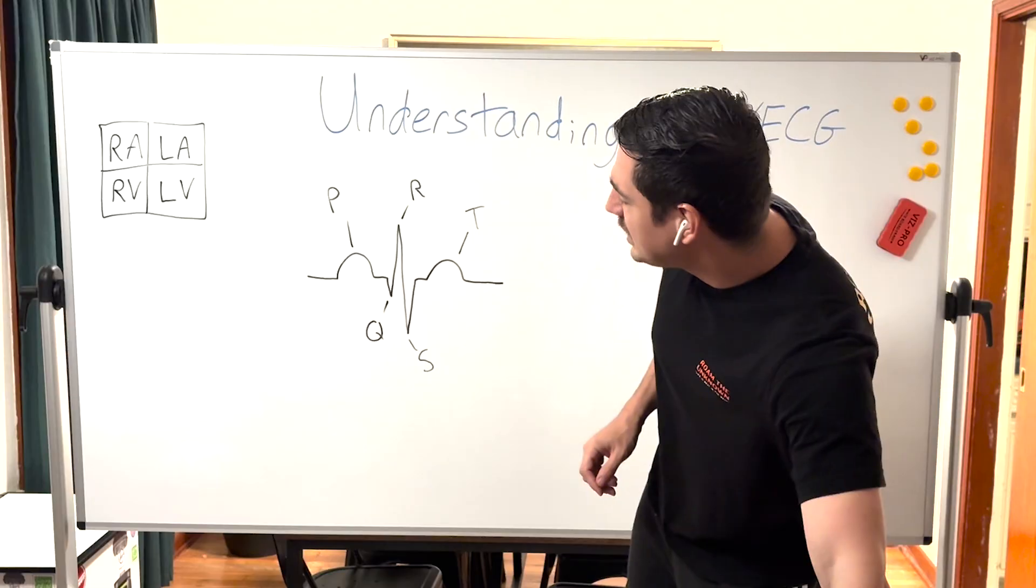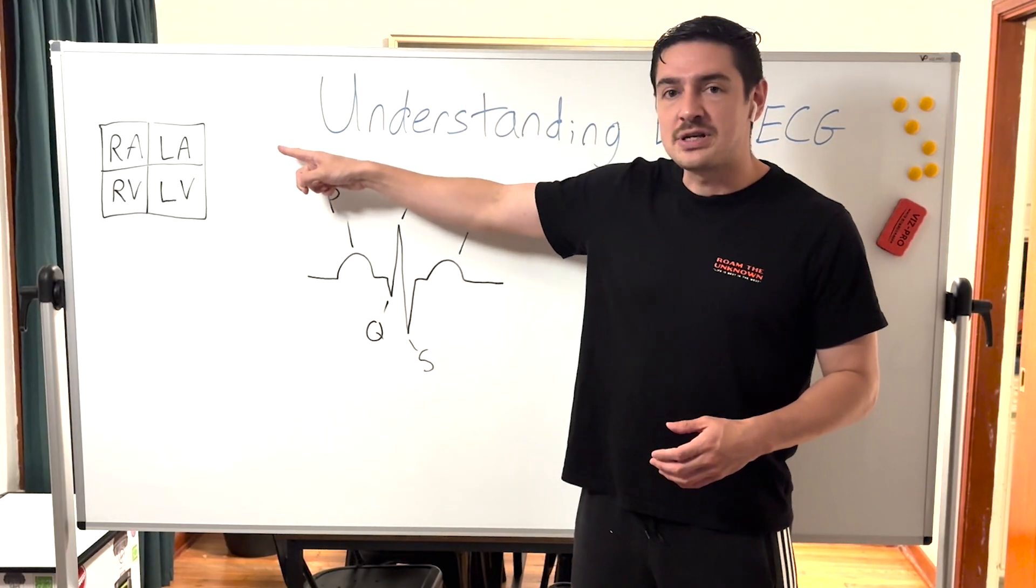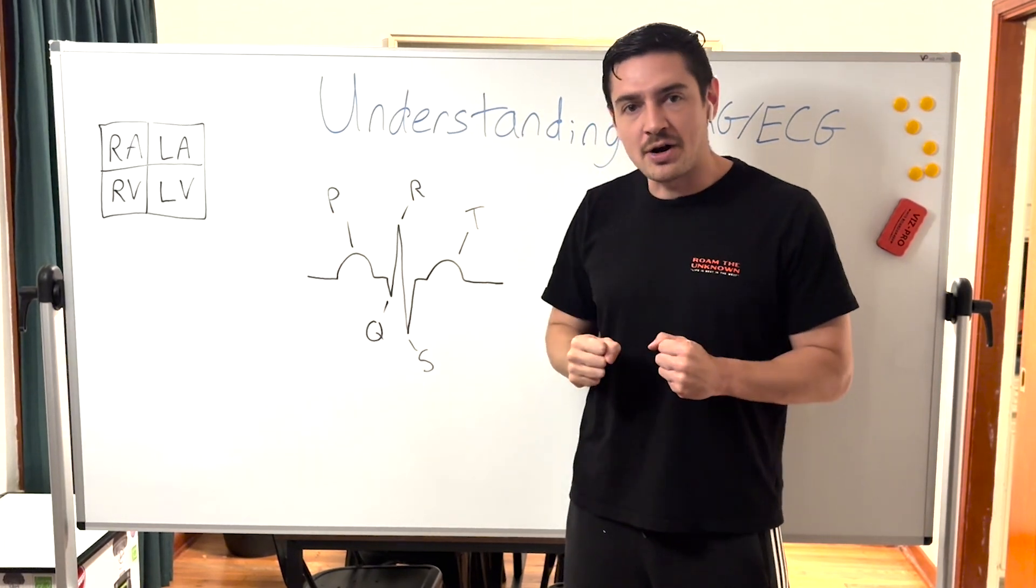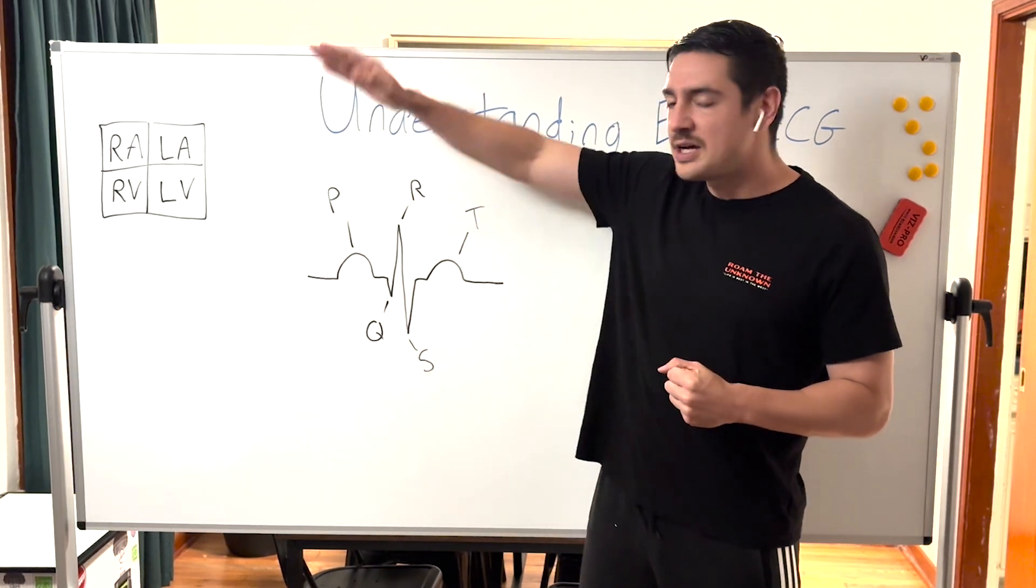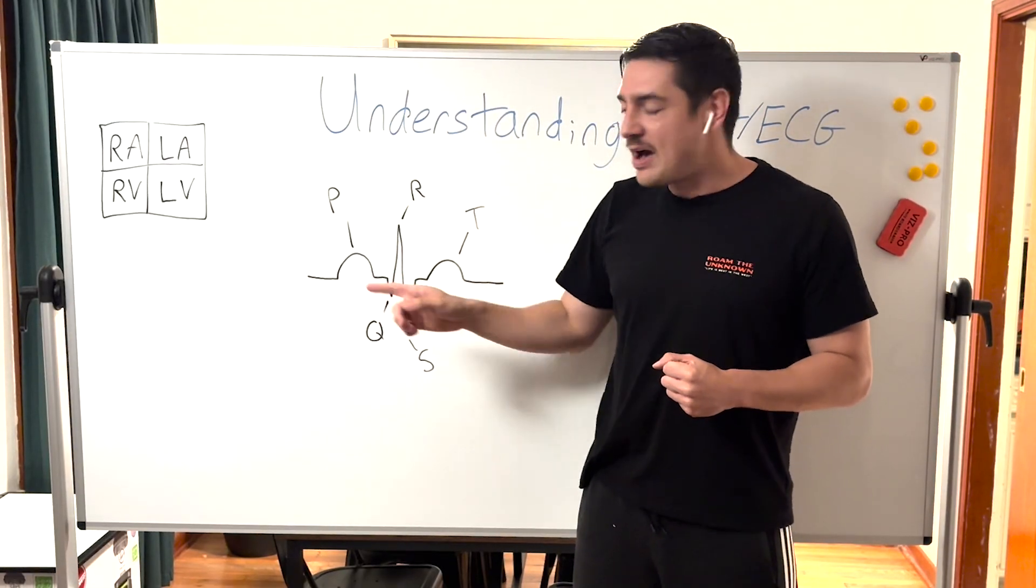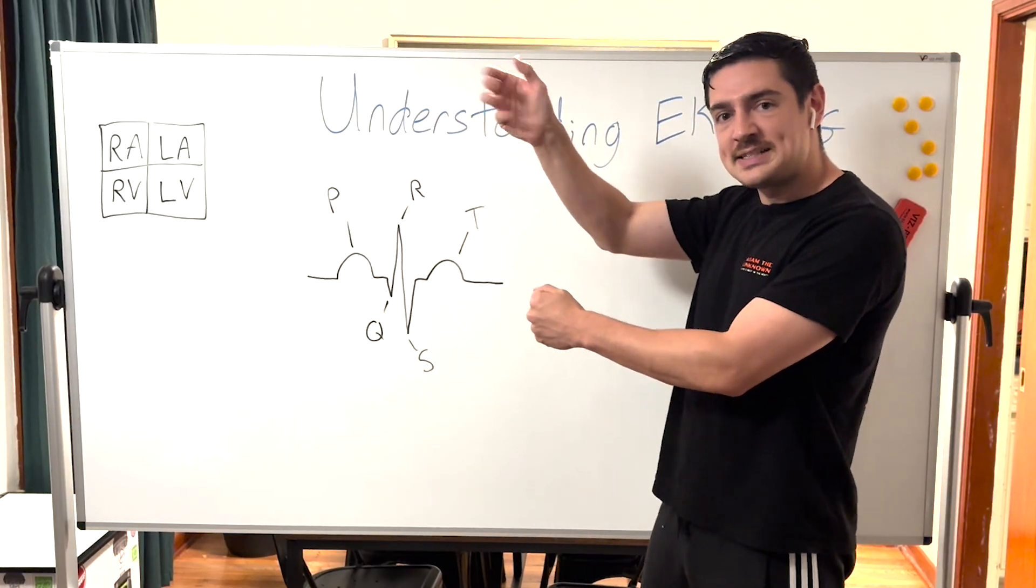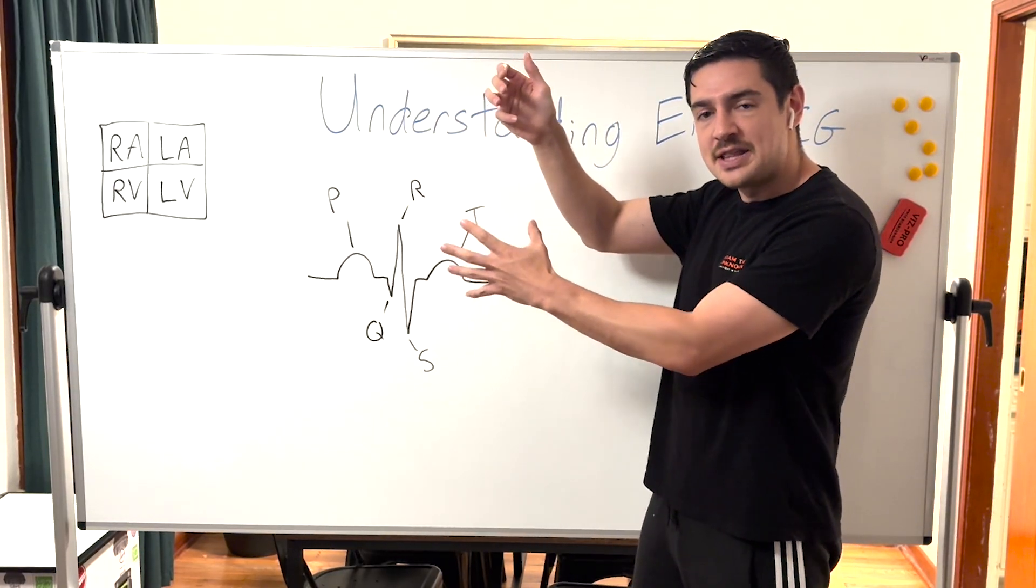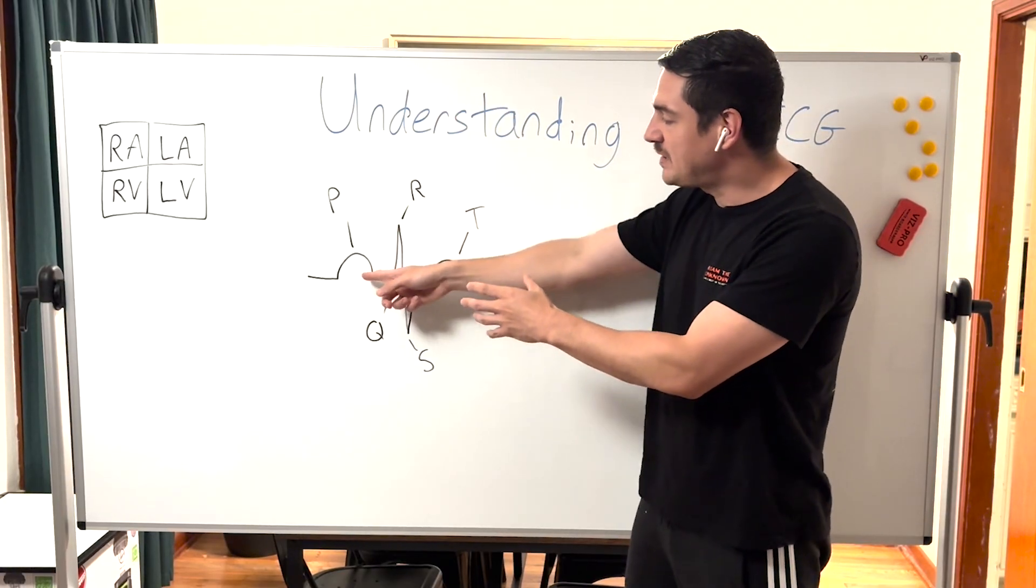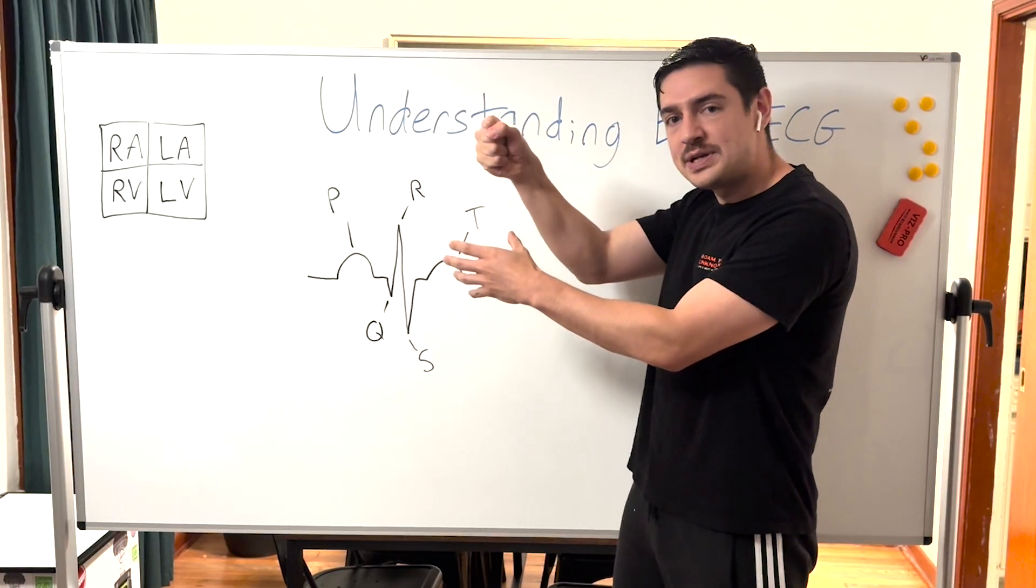We have our right atrium and left atrium, the two atriums, and we have our right ventricle and left ventricle which are going to squeeze a lot harder. As the electrical conductivity goes through the heart, first we have our P wave. Our P wave is the atrium squeezing, and it's going to fill up blood into the right ventricle and left ventricle.